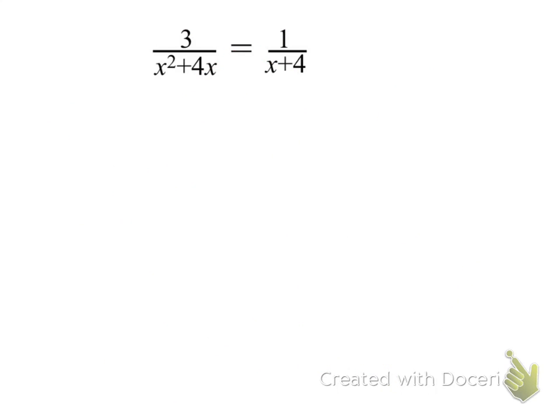So let's look at this problem a little bit differently. And you might end up thinking that this is a little bit easier. If we notice, we can factor that first denominator. We have 3 over, notice that you can pull out a GCF of x, and then you're left with x plus 4. And of course that still equals 1 over x plus 4.